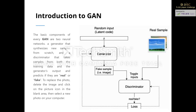GAN images became more realistic over time, but it still operates as a black box, since the origin of the stochastic features is lacking and the properties of the latent space are poorly understood. The basic component of GAN is two neural networks: one is a generator that synthesizes new samples from scratch, and a discriminator that takes samples from both the training data and the generator's output and predicts if they are real or fake. The generator input is a random vector, say noise.